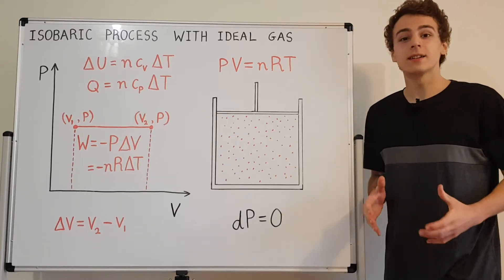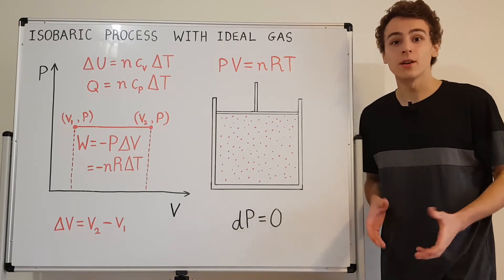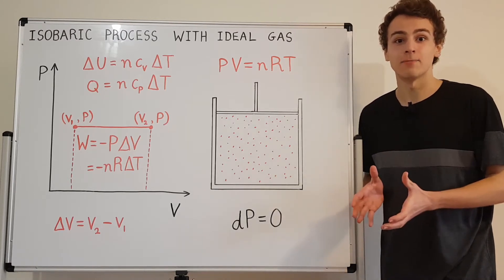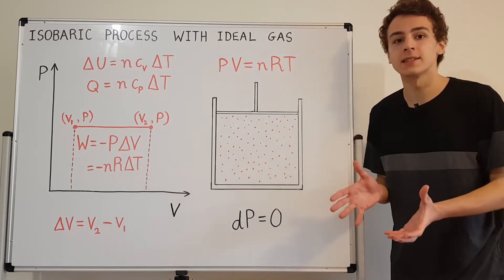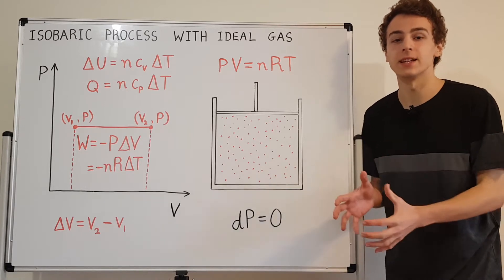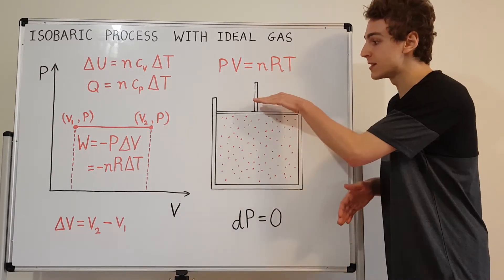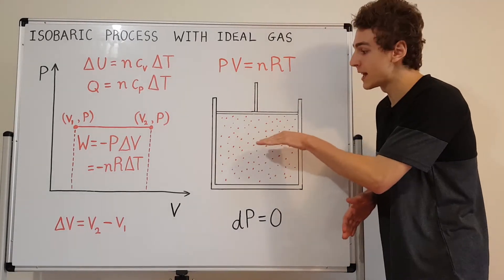In this video I'm going to discuss isobaric processes with ideal gases. So let's say we have an ideal gas that's enclosed in some kind of container and let's say we have a piston that can push down onto that ideal gas.